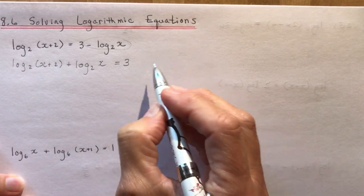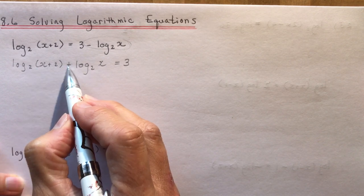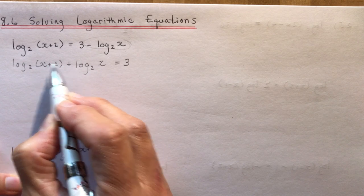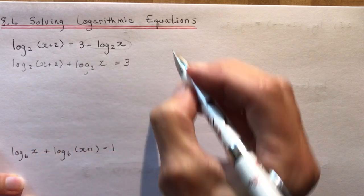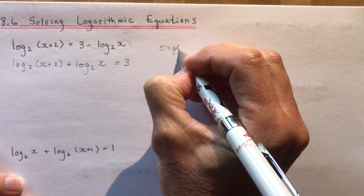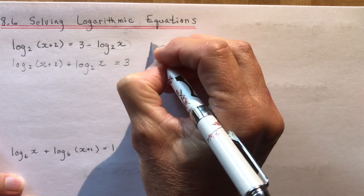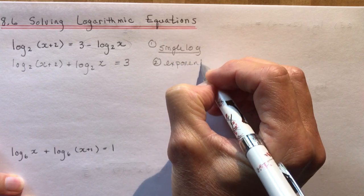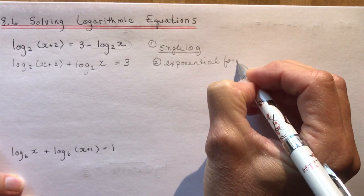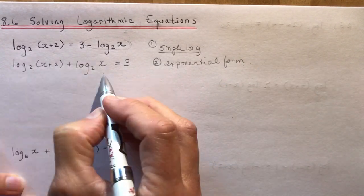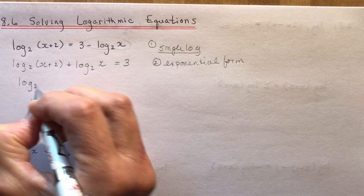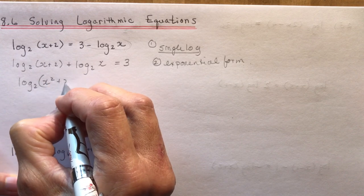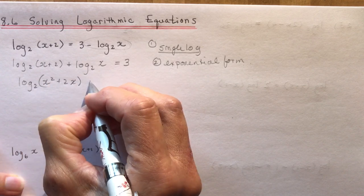Don't worry — we've got a plus sign here, and because it says plus, we know from our rules with logarithms that if it's plus I can multiply these and make it into a single log. Your goal is to get a single log, and once you have the single log you can convert to exponential form. So the log of 2 times x squared plus 2x is equal to 3.